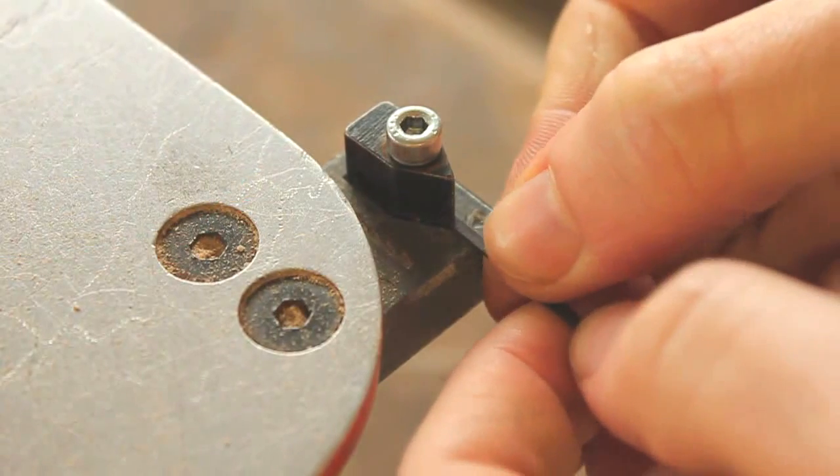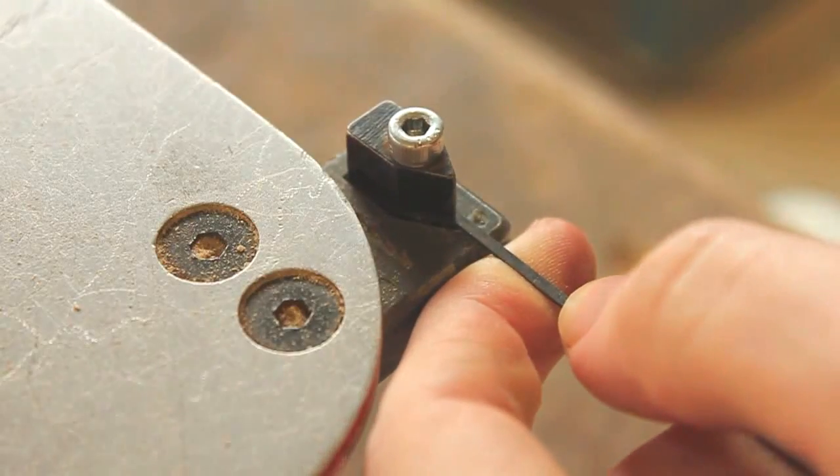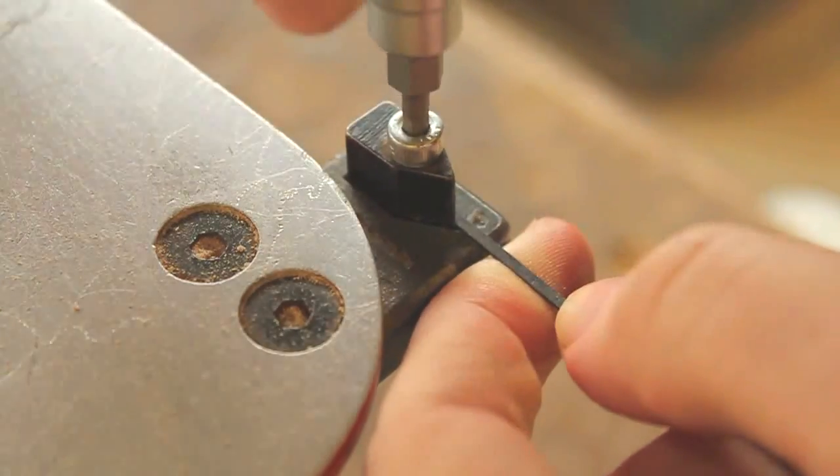Now put the replacement blade in the slot, make sure it's centered and tighten up the machine screw with your fingers before finishing it off with a wrench or allen key.